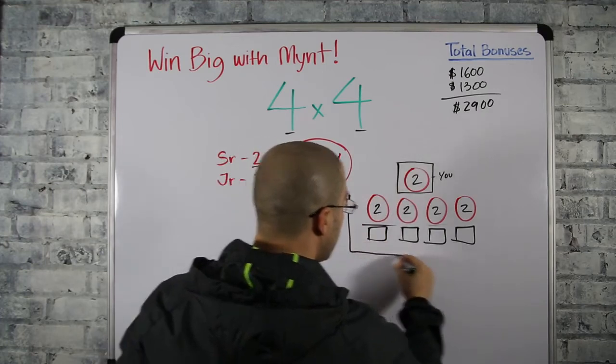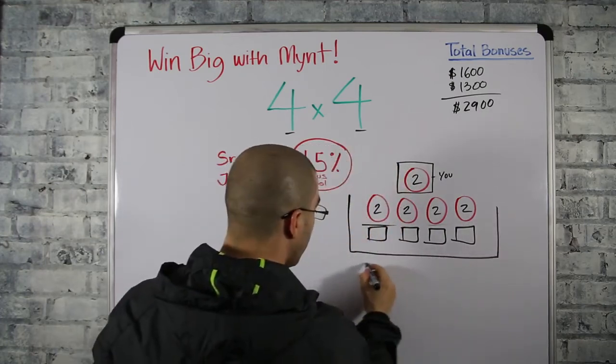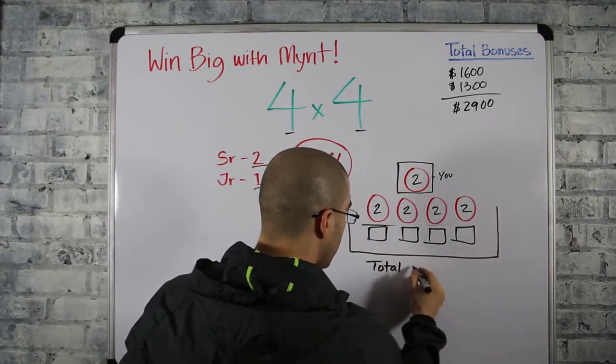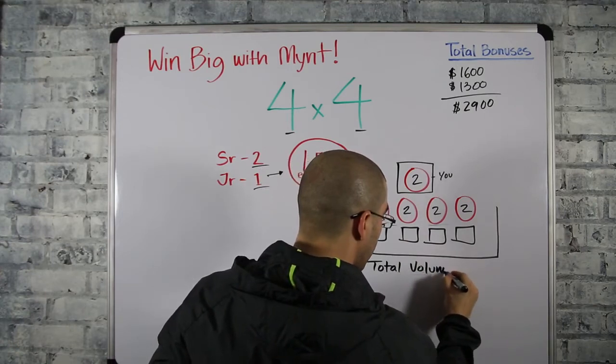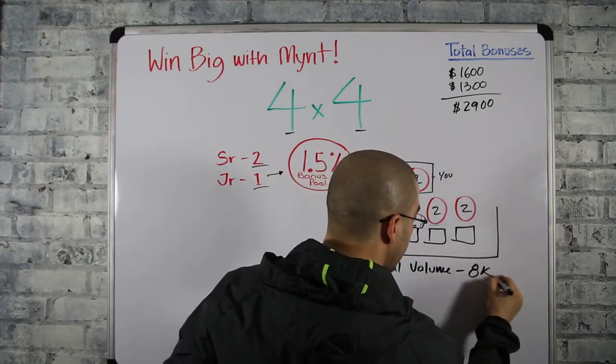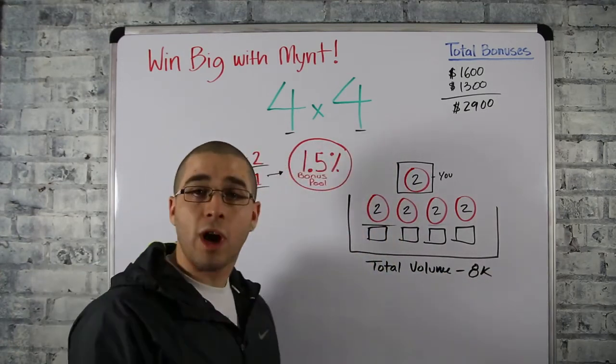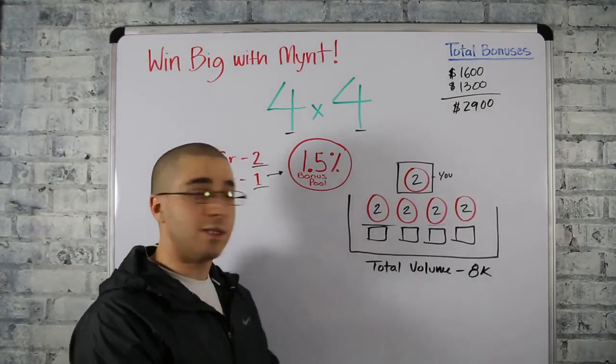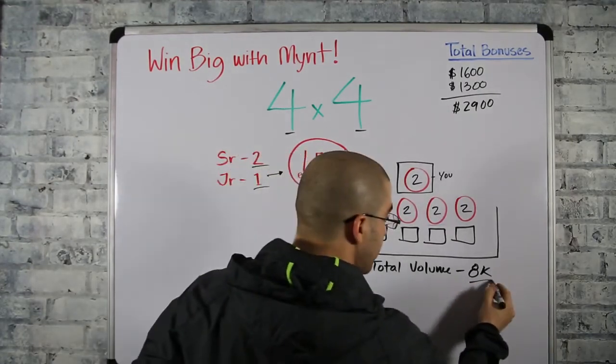Now what volume is, it's just based on products. Products move and it creates volume. So your total volume is eight thousand.